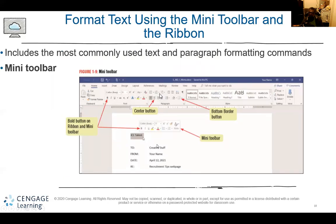The mini toolbar includes the most commonly used text and paragraph formatting commands, set up in groups so you can find what you're looking for. For example, with text highlighted, if you decide you want to bold it, you can right-click and a little mini toolbar pops out with the most commonly used commands. It's pointing towards the B, so if they wanted to bold it they could — or you can hit Control B and it will bold that same text.